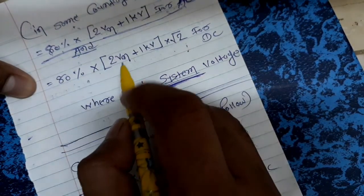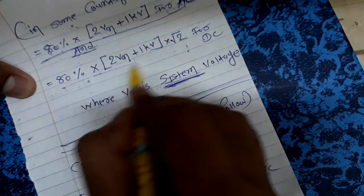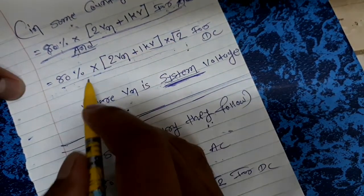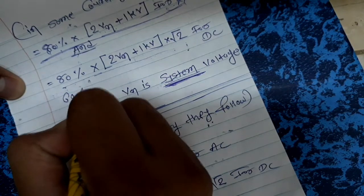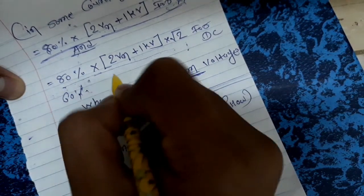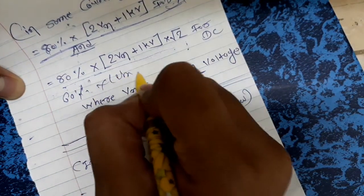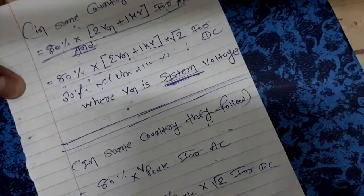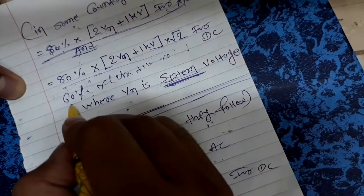For cables, we use a modified formula: 60% × (2Vn + 1kV) × √2.